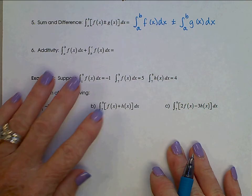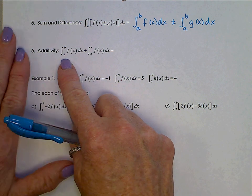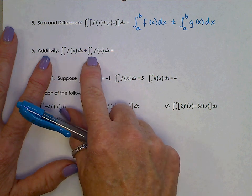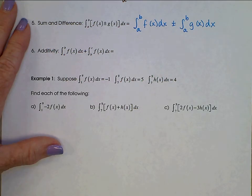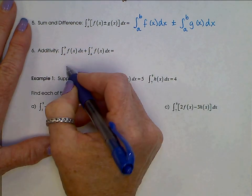This last property for now is called additivity. And if we look at what this says, the integral from A to B of f(x) dx plus the integral from B to C of f(x) dx. So same function this time. Let's sketch a graph and see if we can figure out what this looks like.